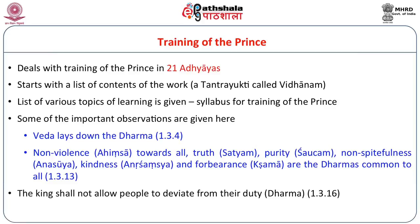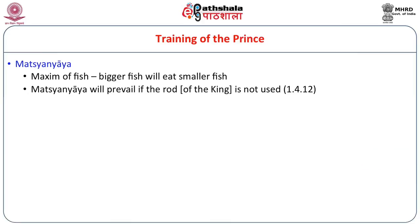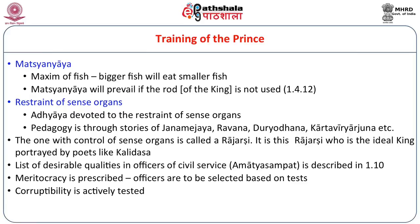The king shall not allow people to deviate from their duty — it is the duty of the king to uphold dharma. Here we are also introduced to the Matsya Nyaya, the maxim of the fish, wherein the bigger fish eats the smaller fish — 'might is right' in English. Without proper rule, anarchy prevails where the weaker are harassed by the stronger. One interesting topic in the training of princes is restraint of sense organs, since power corrupts and absolute power corrupts absolutely.